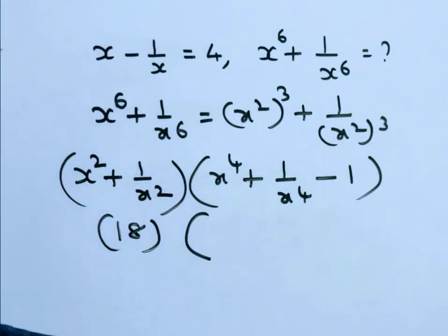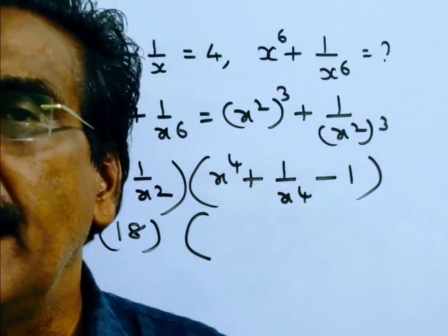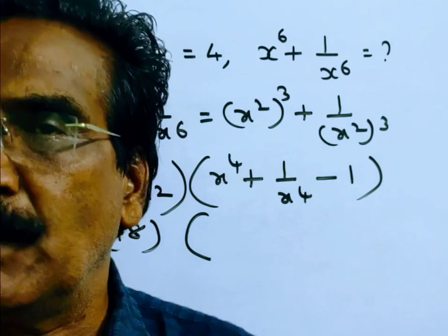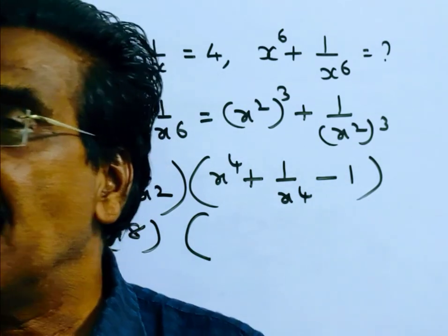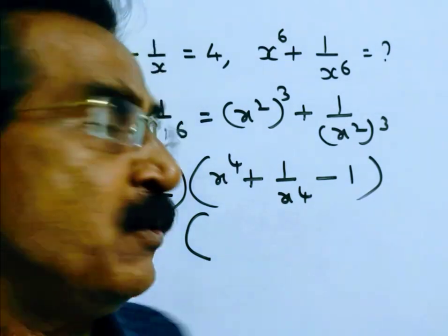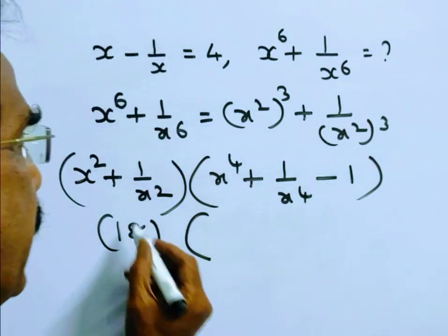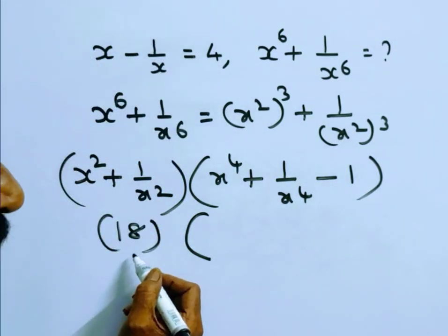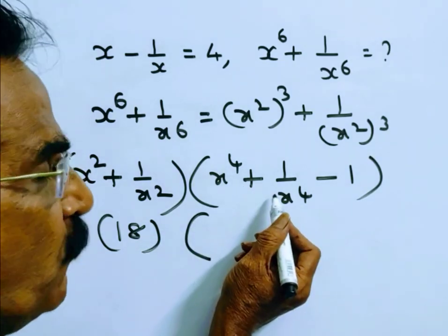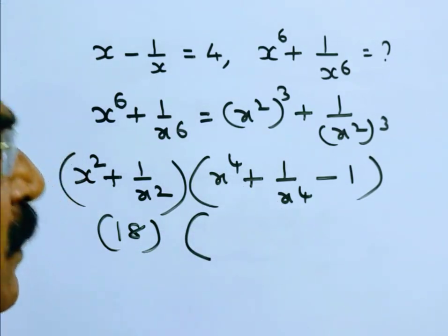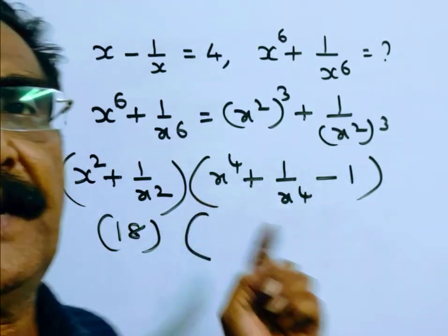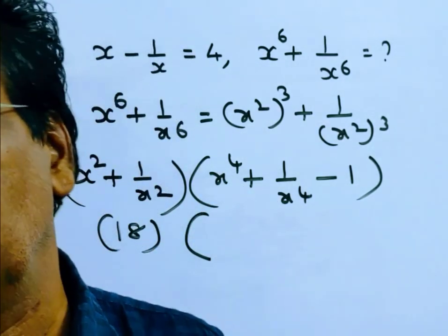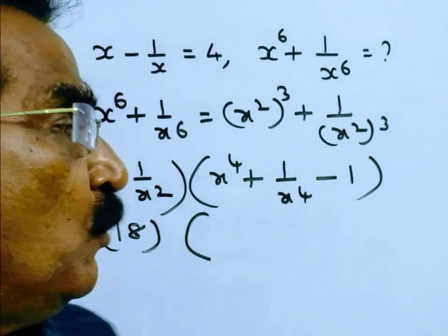x power 4 plus 1 by x power 4 is equal to (x squared plus 1 by x squared) whole square minus 2. x squared plus 1 by x squared is equal to 18, so 18 squared minus 2, that is 324 minus 2, equals 322.